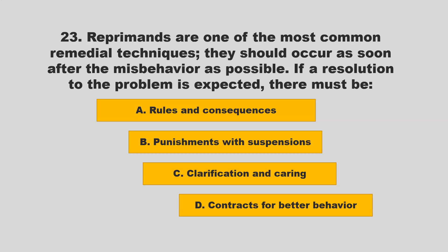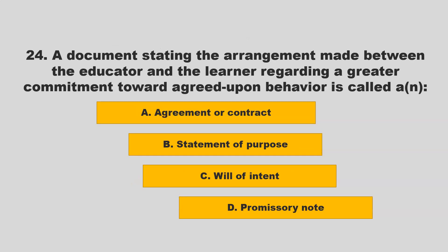If a resolution to the problem is expected, there must be clarification and caring. If you chose C, clarification and caring, you are correct. A document stating the arrangement made between the educator and the learner regarding a greater commitment toward agreed-upon behavior is called an agreement or contract. If you chose A, agreement or contract, you are correct.